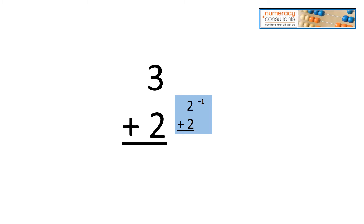Now say we choose to use the three. If we use the three, we know that three plus three is six. We've changed the problem from three plus two to three plus three, so we're going to be greater than the answer by one. So we need to subtract, and we know that the answer is five.